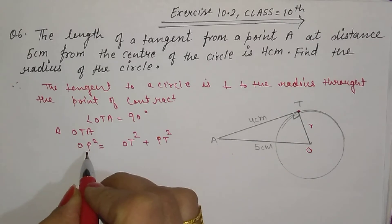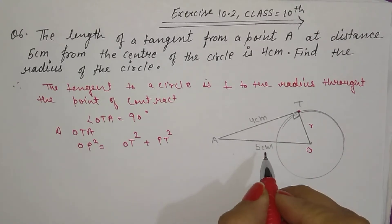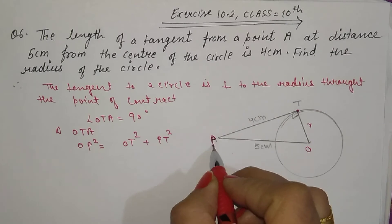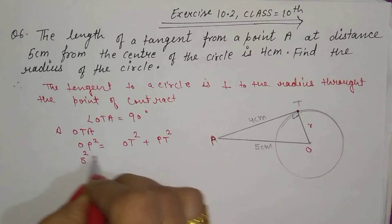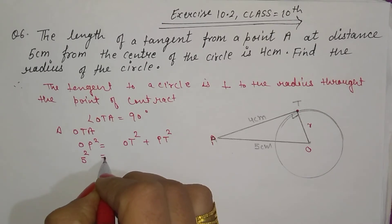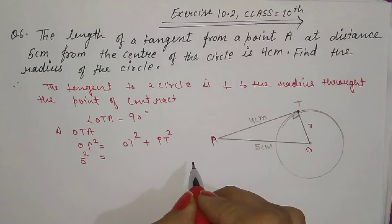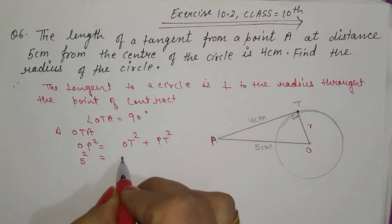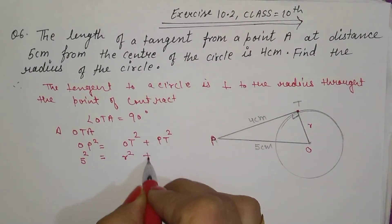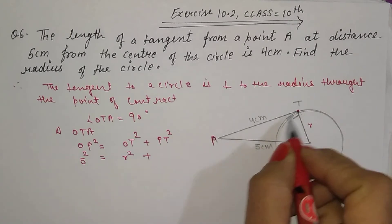So OA is given to you, OA is given to you 5 square, and OT is not given, you have to find this. So R square plus AT is given to you 4.